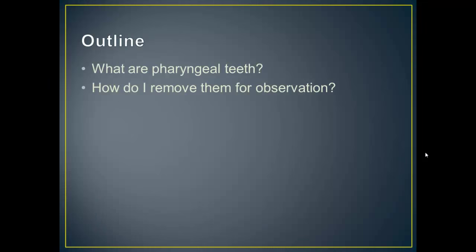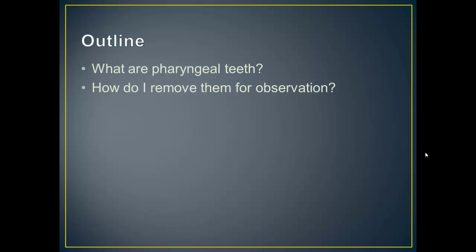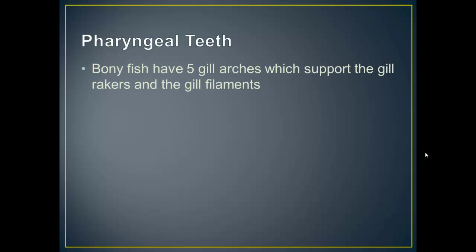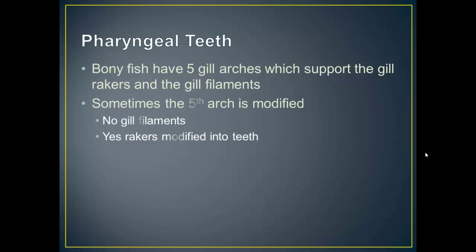The pharyngeal teeth are of course the throat teeth. Bony fish have five gill arches, and most of those gill arches support the gill rakers on the anterior part and the filaments on the posterior part. But sometimes that fifth arch is modified — it does not have gill filaments but it does have teeth, and it's probably the rakers getting modified into those teeth. Those are the pharyngeal teeth.